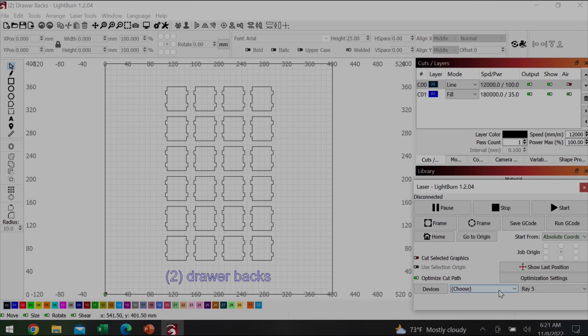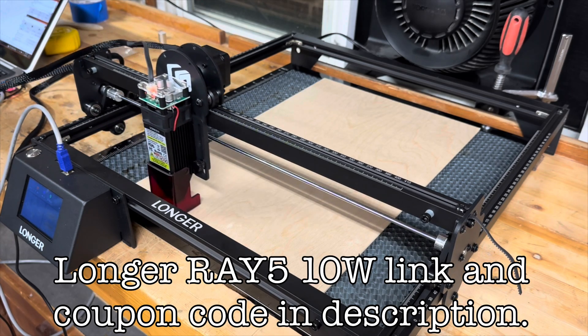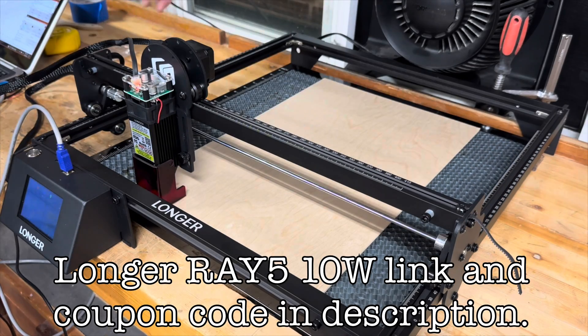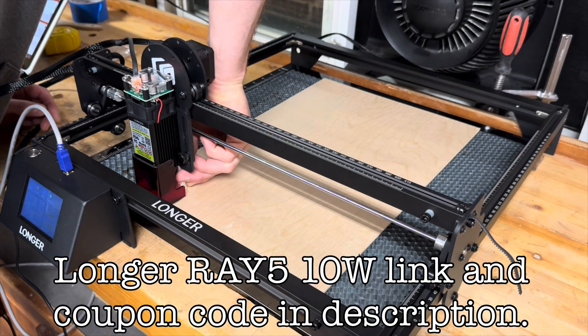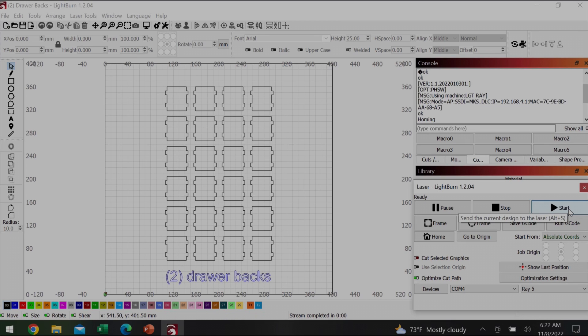Once the Ray-5 was powered up and connected, I checked my frame. I always do this to make sure that my material is properly positioned so it actually gets cut. I also made sure that the laser was the proper height over my plywood. And with that done, I clicked start.